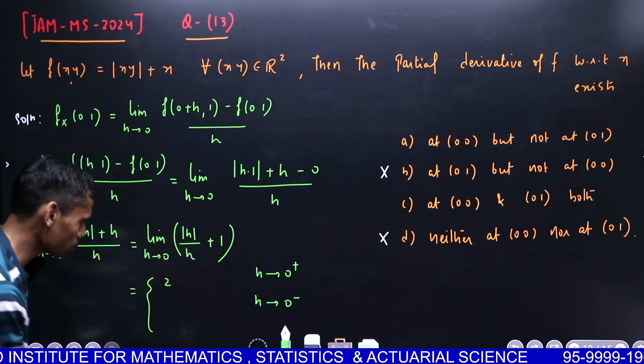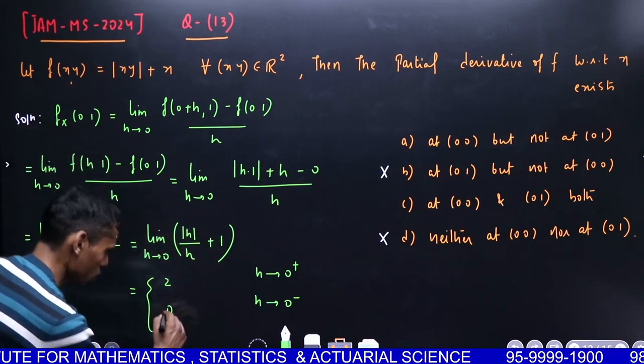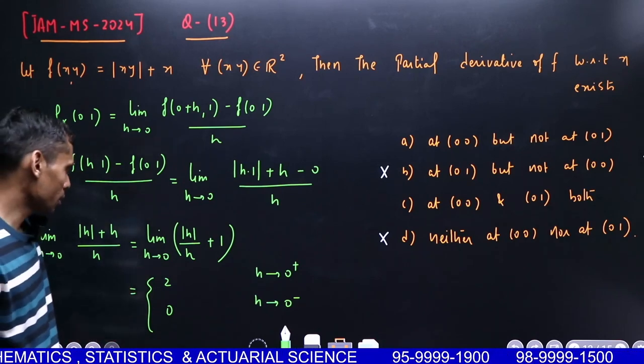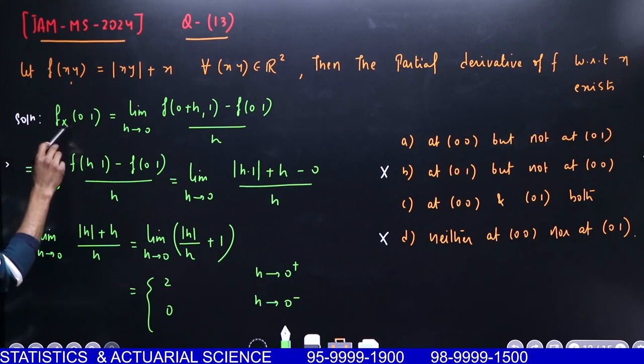Similarly, if h approaches 0 from the negative side, this becomes -h. So -h/h = -1, giving -1+1 = 0. The limit doesn't exist! So the limit does not exist, meaning the partial derivative with respect to x at (0,1) does not exist.